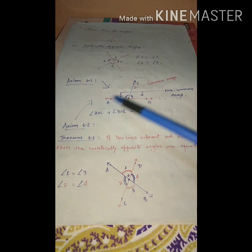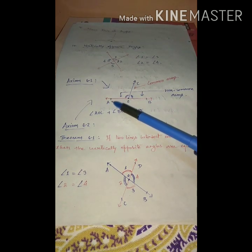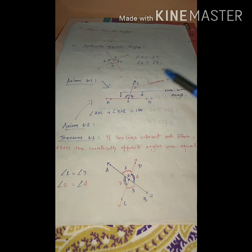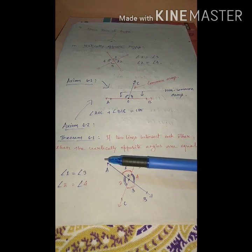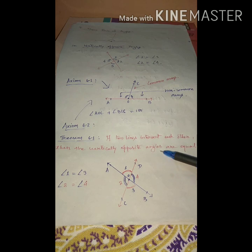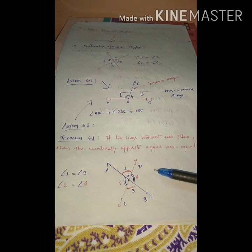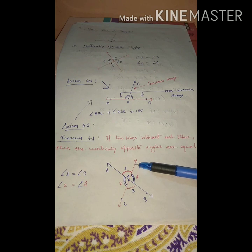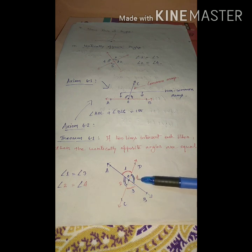Axiom 6.2: if the sum of two adjacent angles is 180 degrees, we get a straight line. Now, with respect to Axiom 6.1 and 6.2, there is Theorem 6.1. The statement is: if two lines intersect each other, then the vertically opposite angles are always equal. Here AB is a straight line and CD is another straight line. Angles 1 and 3 are vertically opposite, and angles 2 and 4 are vertically opposite.